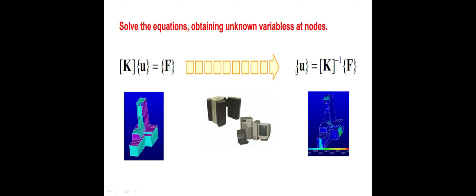If you want to find the displacement function: U = F/K, meaning force divided by stiffness inverse — we are getting F as a matrix representation. Like this, we calculate unknown displacement with help of the finite element equation F = K × U.